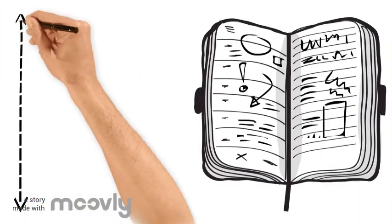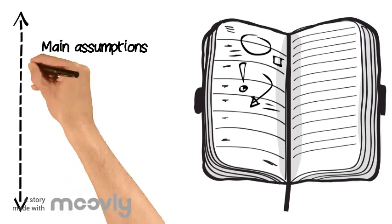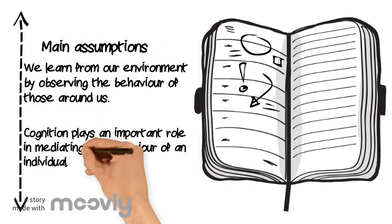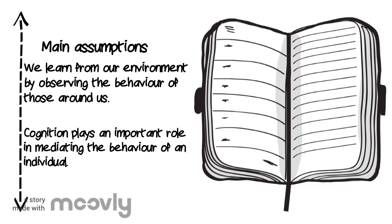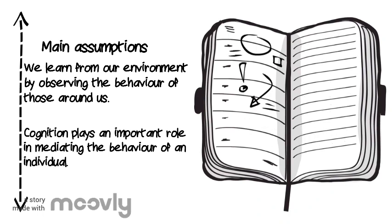There are two main assumptions of social learning. Number one, we learn from our environment by observing the behaviour of those around us. Number two, cognition plays an important role in mediating the behaviour of an individual.